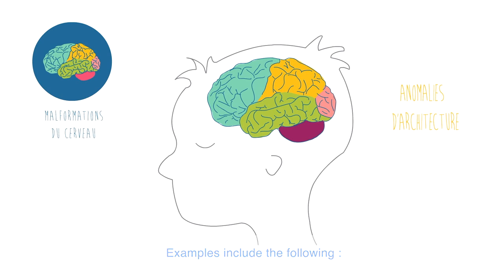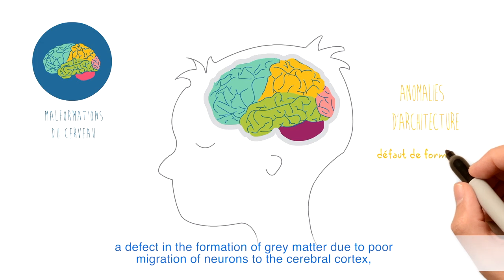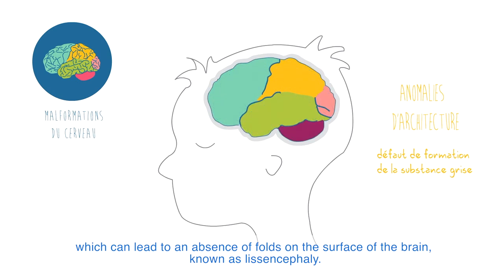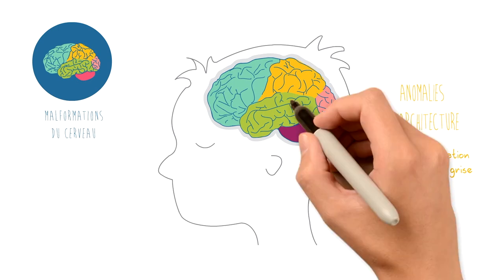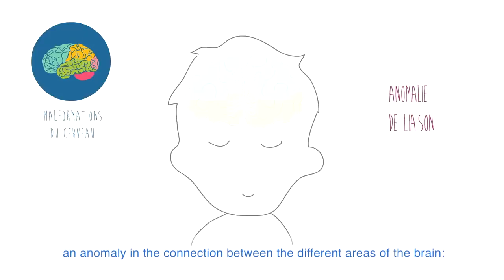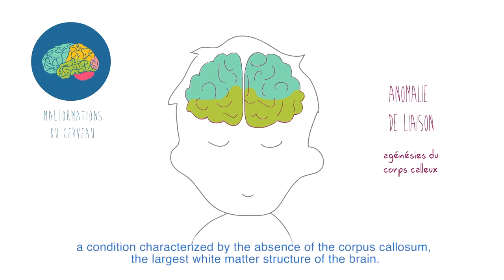Examples include a defect in the formation of grey matter due to poor migration of neurons to the cerebral cortex, which can lead to an absence of folds on the surface of the brain, known as lissencephaly. A malformation of the cerebellum. An anomaly in the connection between different areas of the brain, with a defect in the constitution of the white matter, such as agenesis of the corpus callosum — a condition characterized by the absence of the corpus callosum, the largest white matter structure of the brain.